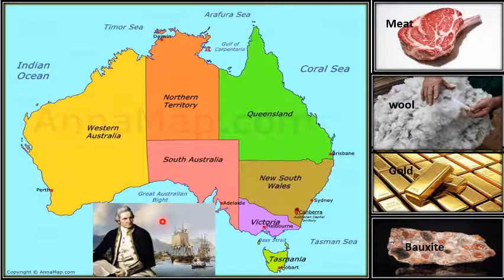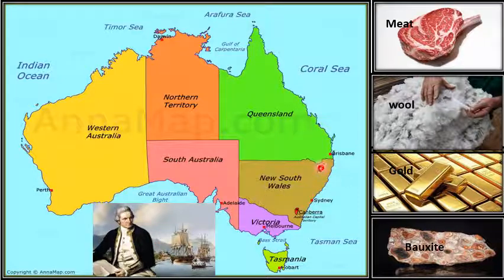On 19th April 1770, Captain James Cook, a British navigator and explorer, claimed the east coast of Australia for the British Crown. He named it New South Wales.